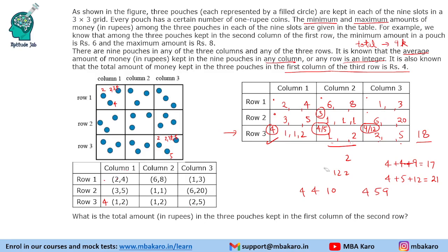For the slot with range 6 to 8, the minimum is 6 + 6 + 8 = 20 and maximum is 6 + 8 + 8 = 22. Adding these columns together: minimum is 23 and maximum is 30. The range is 27 to 30, so the only multiple of 9 that fits is 27. This means the column 2 total is 20, achieved with values 6, 6, 8. The sum 18 decomposes as 4, 4, 10.